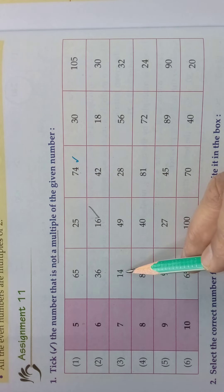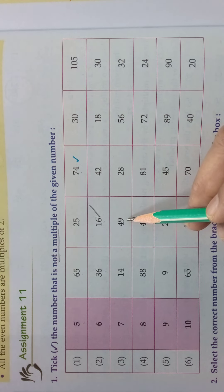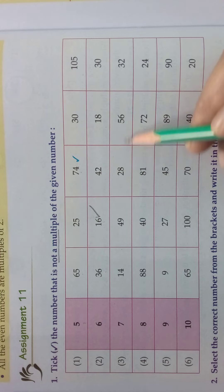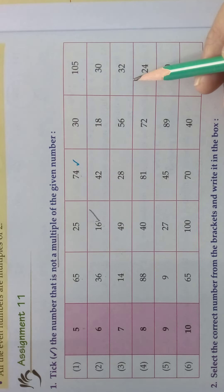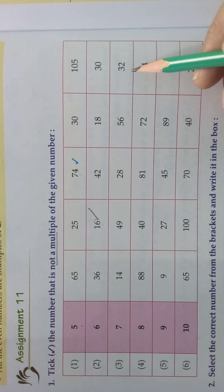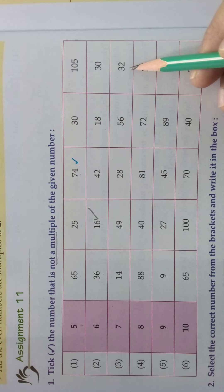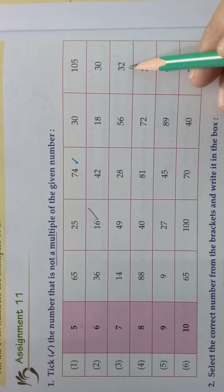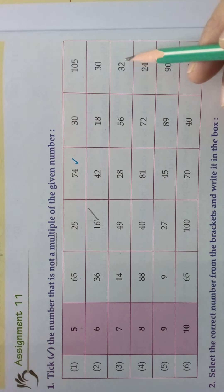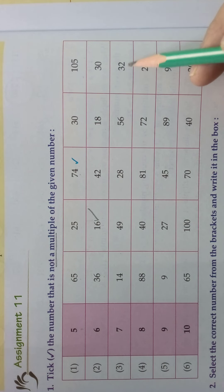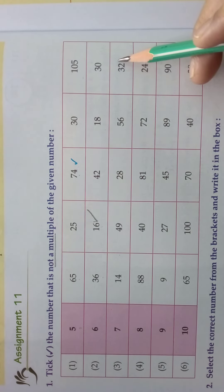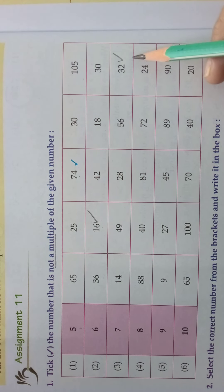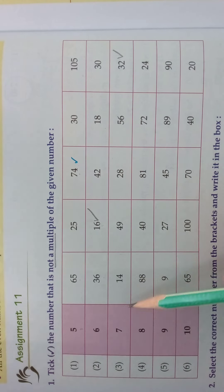For 7: 7 twos are 14, 7 sevens are 49, 4 sevens are 28, 8 sevens are 56. Then 32 — 7 ones are 7, 7 twos are 14, and so on. You should know the tables to find whether the number is a multiple or not. 56 comes (8 sevens are 56), but 32 is not a multiple of 7 — it won't come in the 7 table. So, we can find whether a number is a multiple of the given number or not.